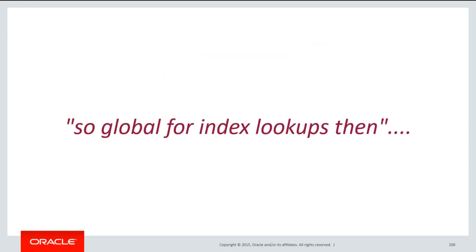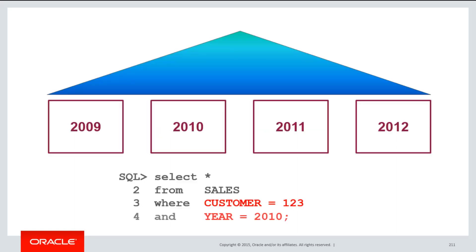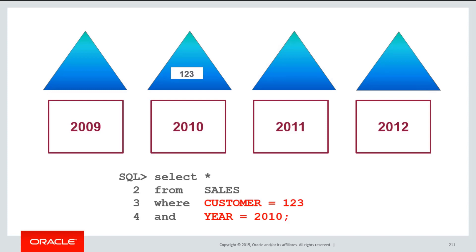Just in case you're thinking you should only use global indexes for lookups — the answer to that is maybe. It may well be the case that your application, when doing queries by customer, defaults to also including a year. Show me the customers for the current year or a particular year. If your application does that, then you would get significant benefits by still having that index as local, because the addition of the year predicate is going to be enough to make sure that you only have to span one index partition, since you know the partition of relevance is for the year 2010. Always keep in mind the application requirements you have. If you can get away with local partitioning everywhere and still meet all your business requirements, that is probably the way to go. But don't dismiss global indexes out of hand — they can be very, very useful for fast, efficient index lookups.